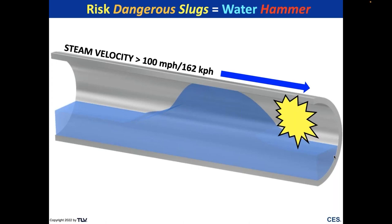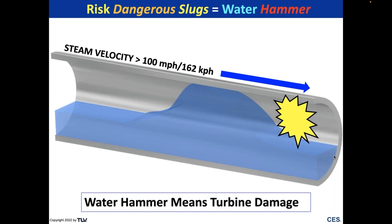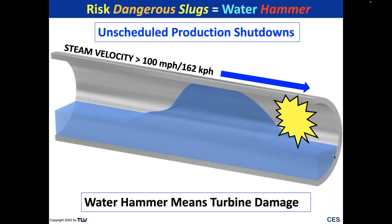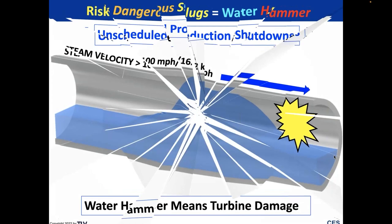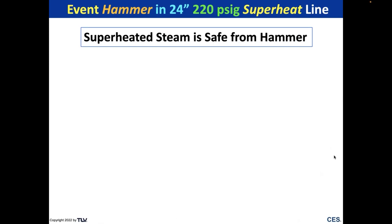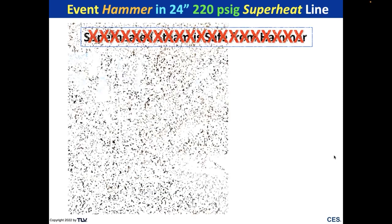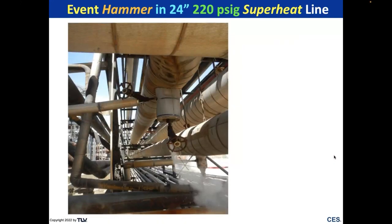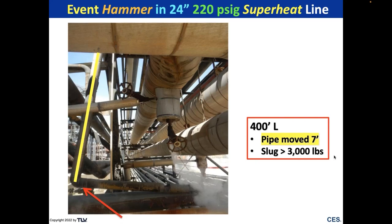Steam velocity is typically 100 miles an hour — 162 kilometers per hour or more. If you build up water into a slug across the cross-sectional area, that velocity can be over 200 miles per hour. Water hammer equates to turbine damage, which can equate to an unscheduled production shutdown. Lots of turbines can be damaged — not only the main compressors but also lube oil pumps. There's another fallacy: that superheated steam is safe from hammer. Here's a plant where a 400-foot length of 24-inch pipe on a 220 psig superheat line moved seven feet from a slug estimated over 3,000 pounds — a force that moved 250,000 pounds of pipe.